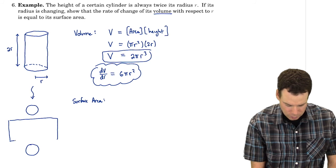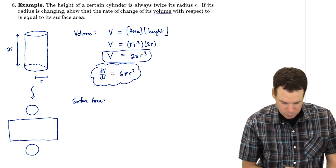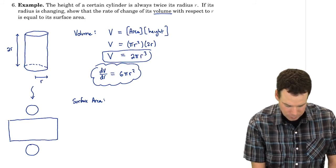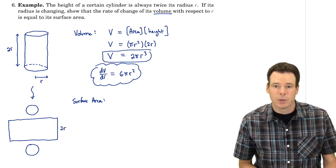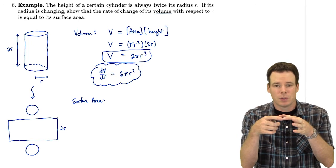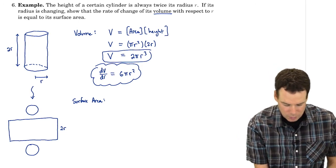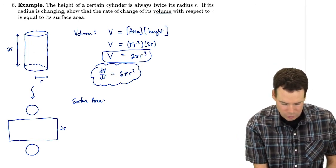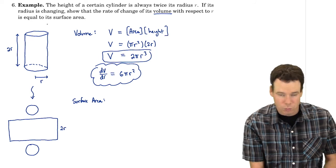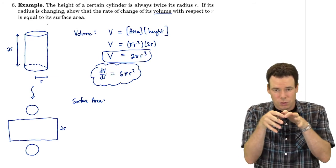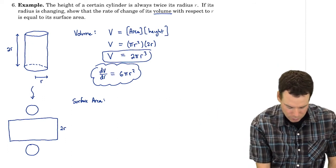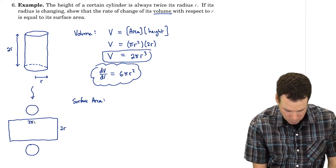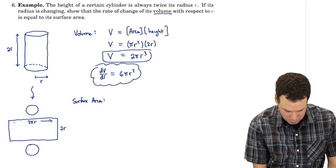We find the surface area of the lateral section by unfolding it into a rectangle. The height of the rectangle is 2R. The length is the circumference of the top or bottom circle. When we unravel it, that circumference becomes the length. The circumference is 2πR.